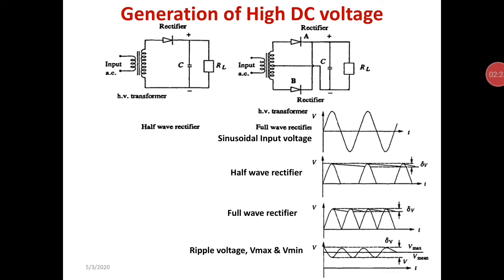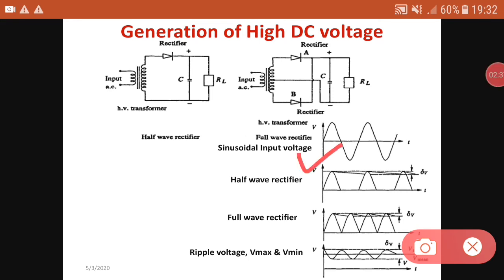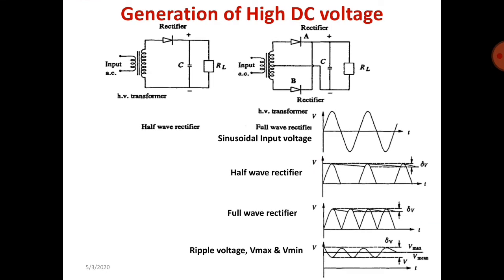During the negative half cycle the diode becomes reverse biased, so we cannot get any output during the negative half cycle. We can see in the waveform: this is the input supply voltage, and this is the waveform for the half wave rectifier.